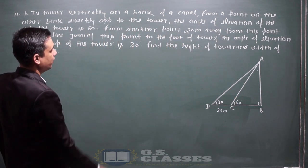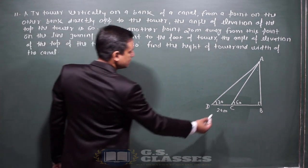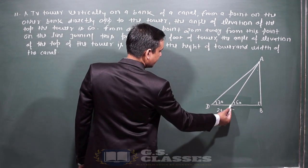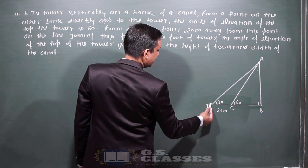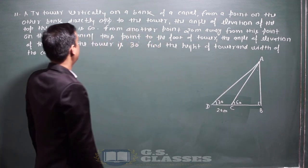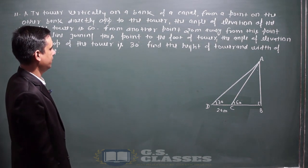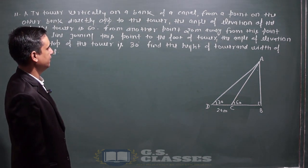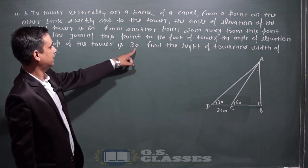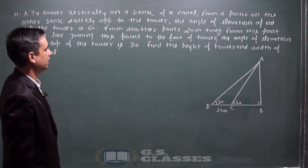From another point which is 20 meters away from this point, the angle of elevation is 30 degrees. This figure is given in the NCERT book. Find the height of the tower.